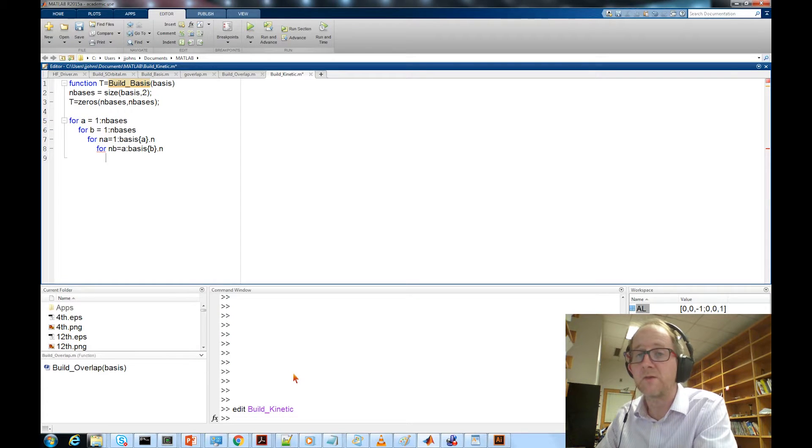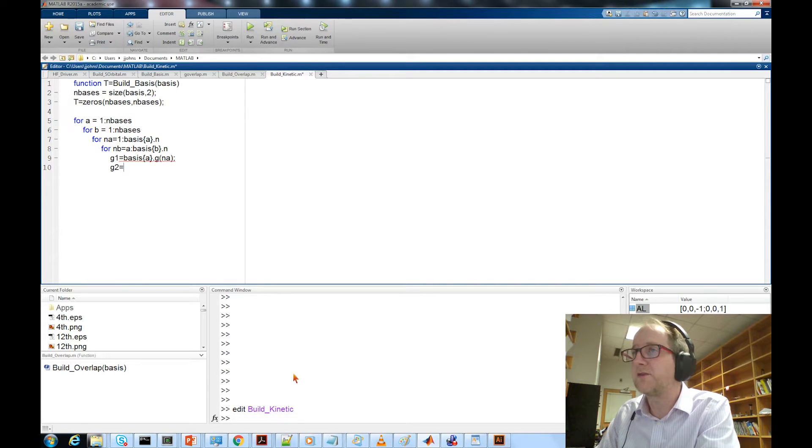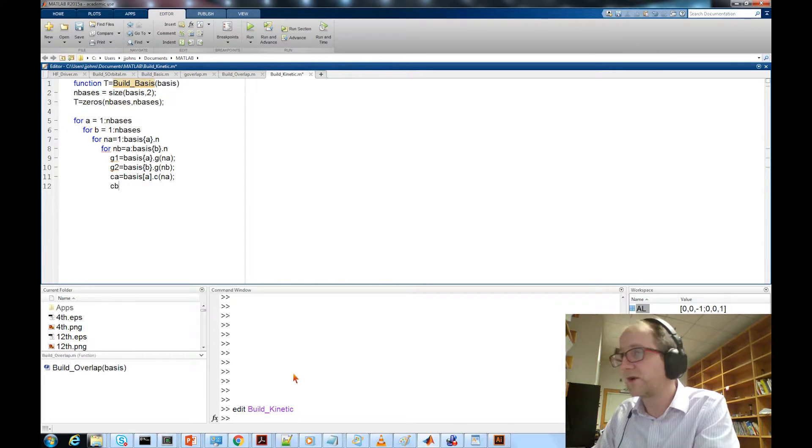Now we can start pulling out information related to those primitive Gaussians. To make typing easier, I'm going to define g1 equal basis a dot g na, and g2 equal basis b dot g nb. I'll pull out the contraction coefficient c sub a, basis a dot c na, and the b contraction coefficient equal basis b dot c nb.